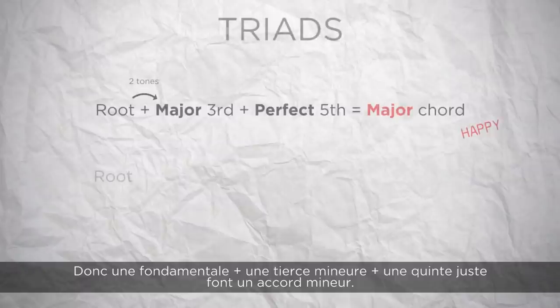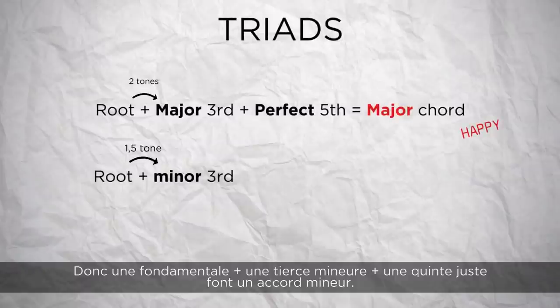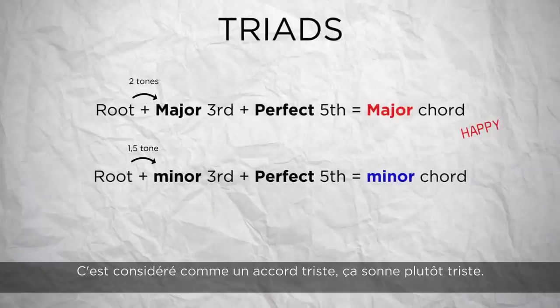So a root note plus a minor third plus a perfect fifth makes a minor chord. That's considered to be a sad chord.